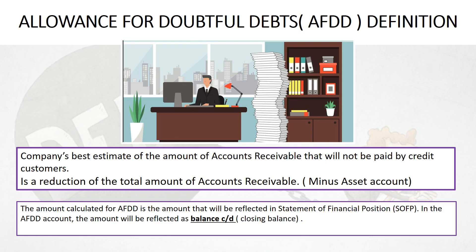Remember, the closing balance in accounting — the way we write it will be called Balance CD. Balance CD will be our closing balance. That's the definition for Allowance for Doubtful Debts. Next we will look at how we're going to use a question to adjust for bad debts and Allowance for Doubtful Debts. Look forward to seeing you in the next video.